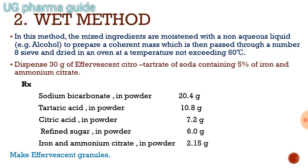Dispense 30 grams of effervescent citro-tartrate of soda containing 5% of iron and ammonium citrate. The ingredients include sodium bicarbonate in powder form, tartaric acid in powder form, citric acid, refined sugar, and iron and ammonium citrate.